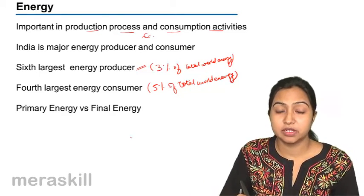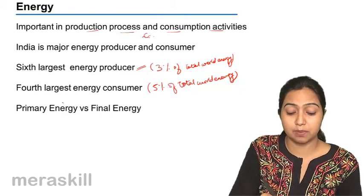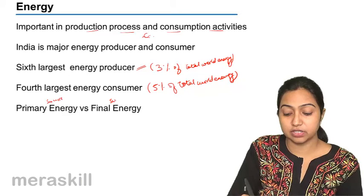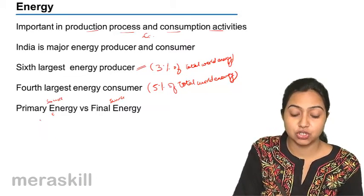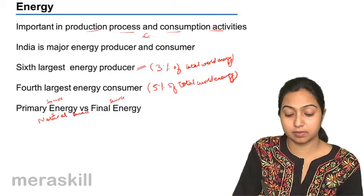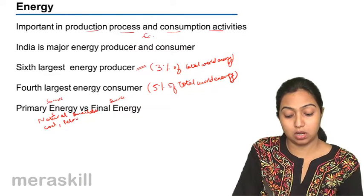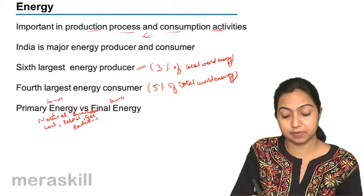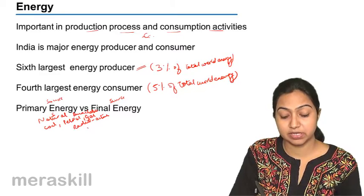Now how do we get energy? What are the sources of energy? There are basically two sources of energy. There is primary source of energy and then there is final source of energy. Primary source of energy is the one that is naturally available on earth, like coal, petrol, gas, and radioactive elements. They are naturally available on the earth, so they are called as primary source of energy.